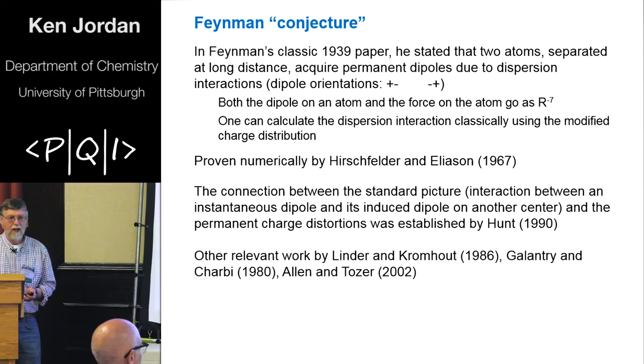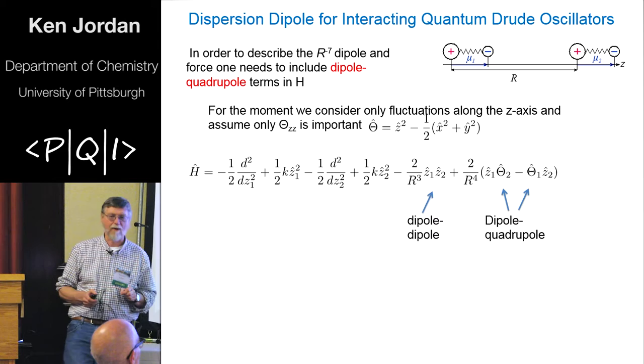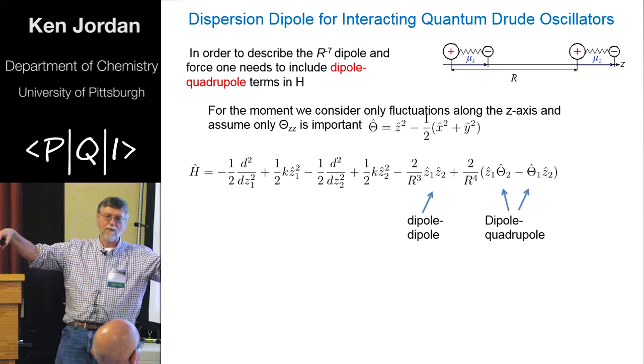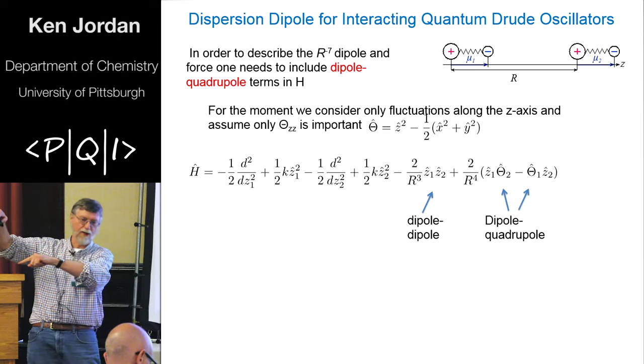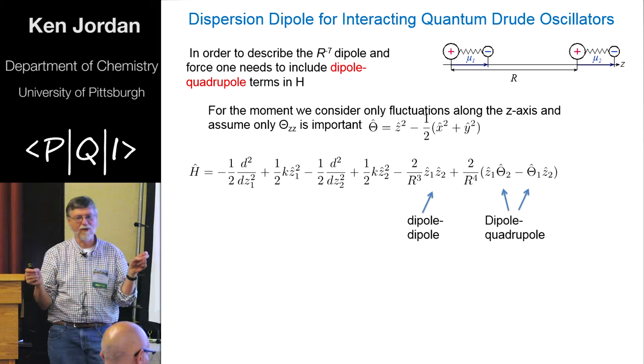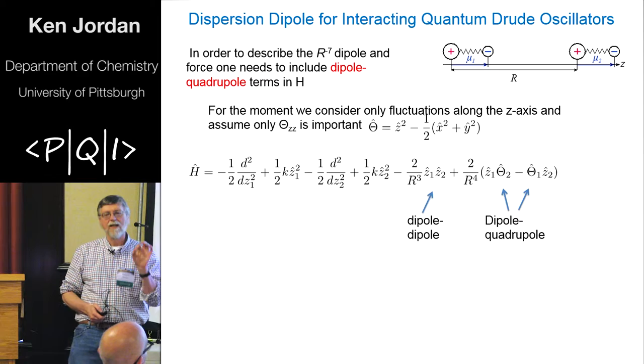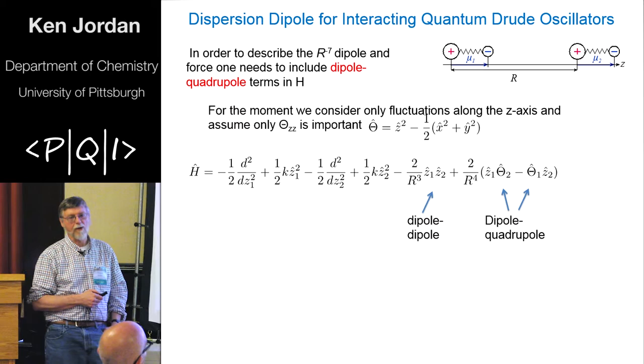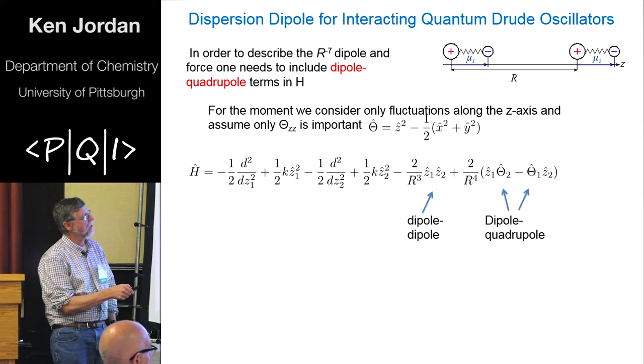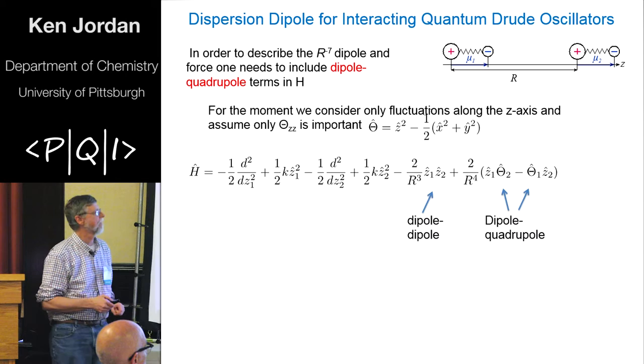So if you go back to this Drude oscillator problem, in the treatment I gave you a moment ago where I gave the exact expression for dispersion, we allowed only for dipole-dipole coupling. So it's an X1, X2 over R cubed coupling. If that's all you had, you would not pick up the permanent dipole. So this statement that Feynman made does not actually work for all Hamiltonians. To get this to work for this model, you have to introduce the dipole-quadrupole term. So your Hamiltonian now has dipole-dipole coupling plus the two possible dipole-quadrupole terms. Then you will pick up the Feynman effect.